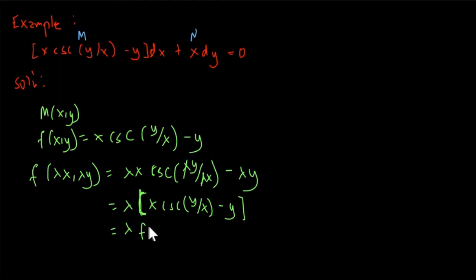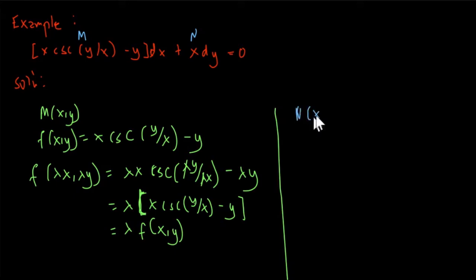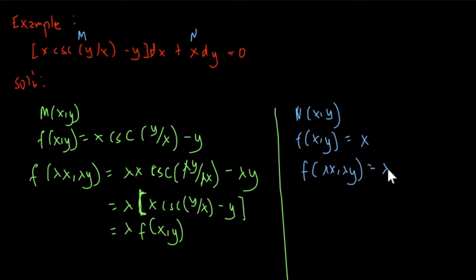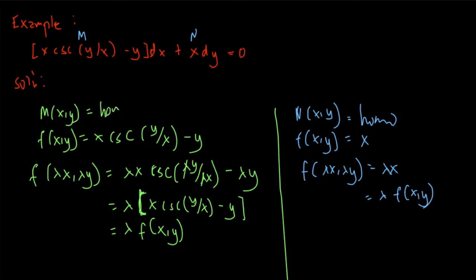Now for our N: the function of xy is simply x. So substituting λx and λy, we get λx. Therefore our N also yields a factor of λ¹, so this is also homogeneous.